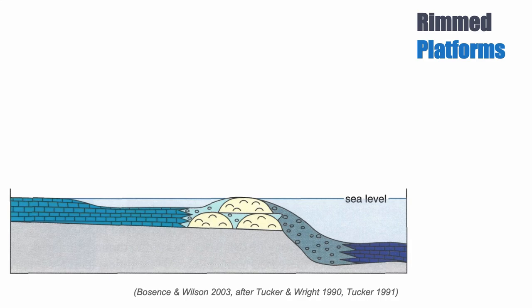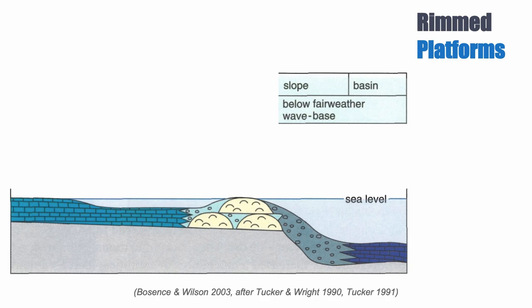Let's start with the facies model for the modern rimmed platform. The reef is a dominant feature, and we know that the reef functions to break wave energy. We can look at the fore reef — what comes before the reef, towards the basin. There we have the slope and the basin as environments. Both are below the fair weather wave base. In the basin, we expect shale and pelagic limestone, and the dominant texture — because we're in a protected environment below fair weather and even below storm wave base — is mudstones.